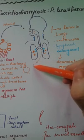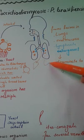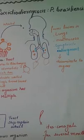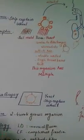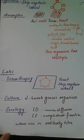It also causes enlargement of the lymph nodes and can disseminate to other organs such as the liver, spleen, and brain.